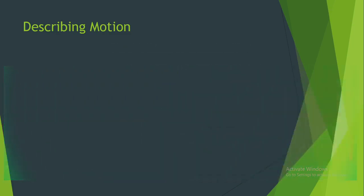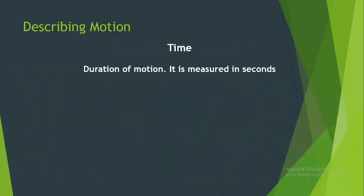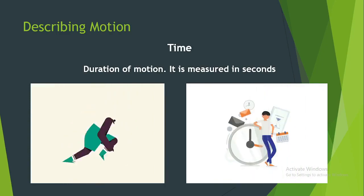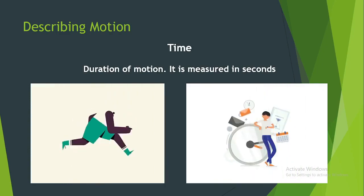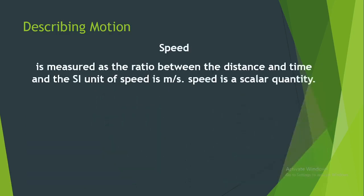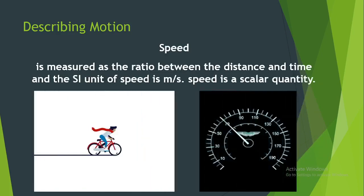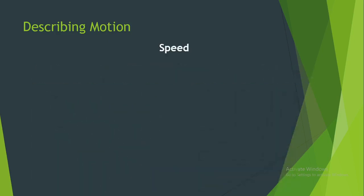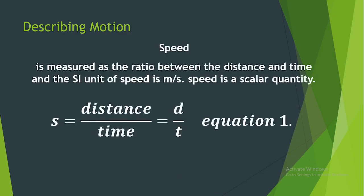Another element of motion is time, defined as the duration of events or motion, measured in seconds. We can compare two runners in a racetrack and quantify who is faster using speed. Speed is the ratio of distance covered per unit time. If you have traveled a greater distance in a small fraction of time, that means you are fast. It has the formula: S (speed) = D (distance) / T (time).